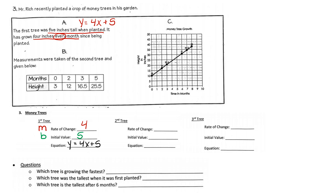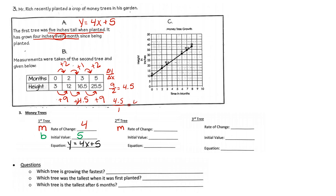For tree B, measurements are given in a table. The x-values change by 2, 1, then 2. The y-values go 3, 9, 12, 16.5, 25.5 — changing by 9, 4.5, and 9. Setting up the rate of change as a fraction: 9 over 2 equals 4.5; 4.5 over 1 equals 4.5. The rate of change is 4.5, meaning tree B is growing 4.5 inches each month. The initial value at x equals zero is 3, so the tree was 3 inches tall when planted. Equation: y equals 4.5x plus 3.